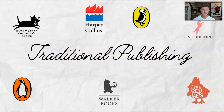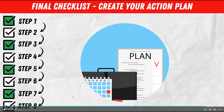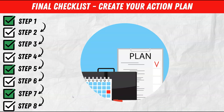Develop your final checklist and action plan. Step through each of those points, get yourself well organized, and develop that action plan — because without action, nothing will happen. Use this video or the course to create the step-by-step plan you're going to follow to create your book, and start implementing your checklist to build that flow and momentum.